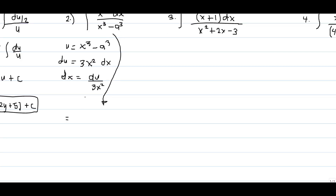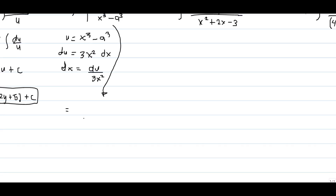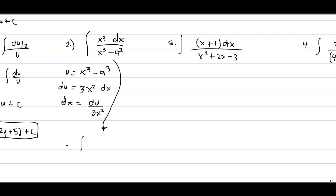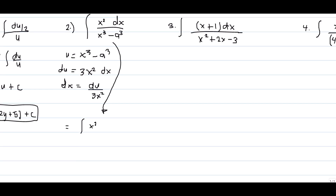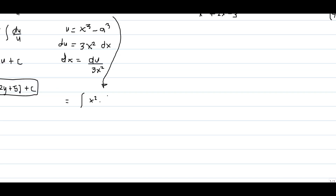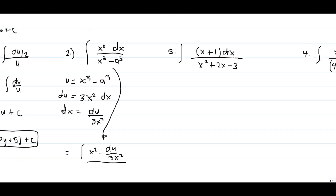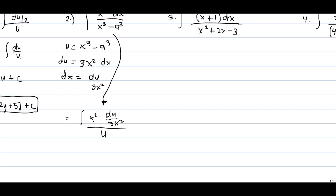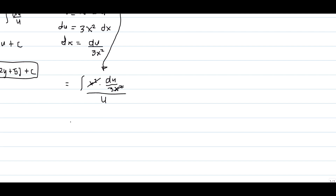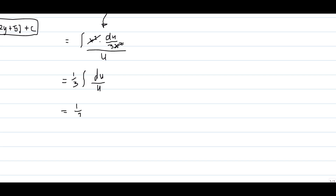We can change the problem by substituting the equivalents of u and du. We have x squared times du over 3x squared, all over u. Since x squared appears in both numerator and denominator, we can cancel x squared and obtain 1 third times the integral of du over u. Therefore we have 1 third times ln u plus C.